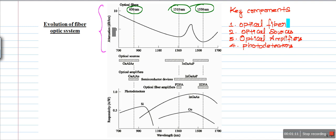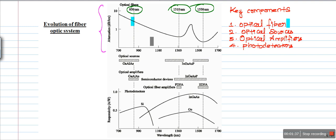Looking at the first graph, this shows the evolution of optical fibers. This is a graph of attenuation versus wavelength. Initially, optical links were established with the first window at 850 nanometers, where the loss is around 5 dB per kilometer.